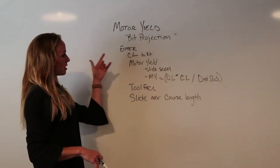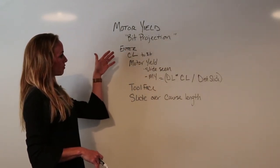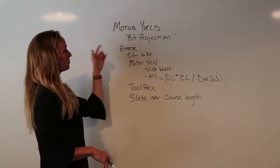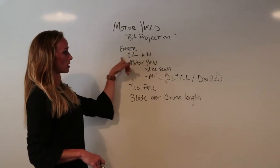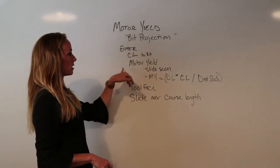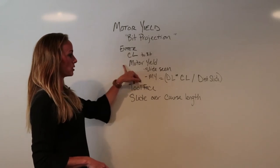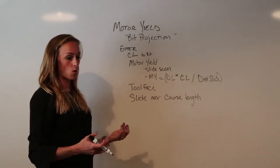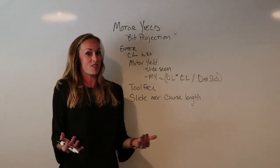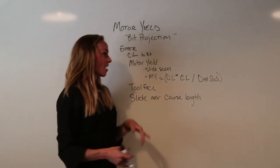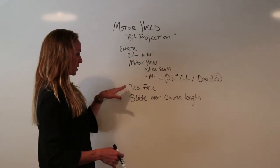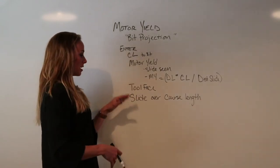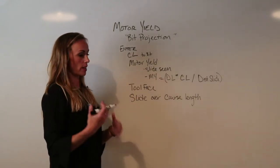So what we ask for in the motor yield — you'll add a target. We ask for your course length to your bit. Your motor yield will need to include — this can be a calculated motor yield or what you think you're getting. You would enter the tool face that you want to hold over that distance, and then your slide over that course length.